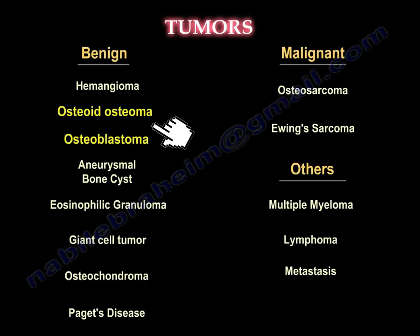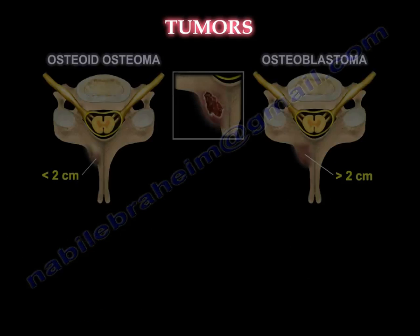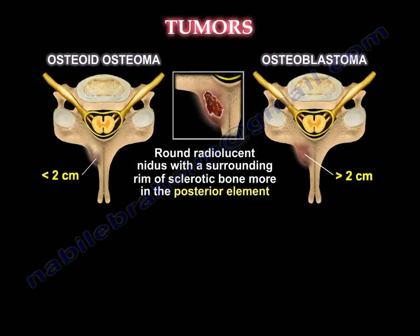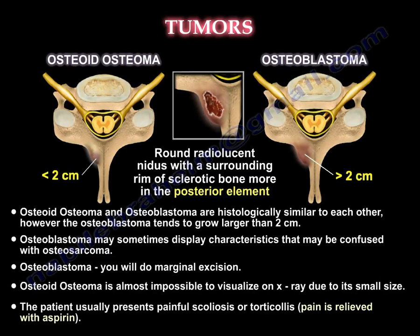Osteoid osteoma and osteoblastoma: Osteoid osteoma is less than 2 cm. Osteoblastoma is more than 2 cm and it affects the posterior element. Usually it is a round, radiolucent nidus with a surrounding rim of sclerotic bone.